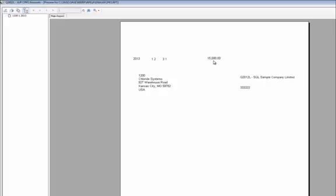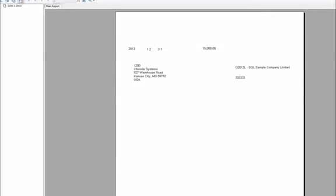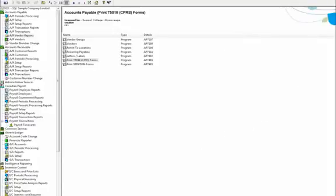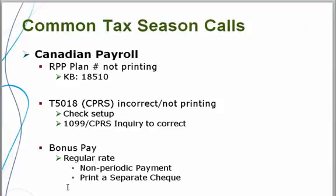So we have $12,000 and $3,000, which makes $15,000 total. Another common call is bonus pay. Sometimes customers would like the regular rate to be calculated on the bonus amount. Normally you can select the non-periodic payment option within the setup of the bonus pay, and it should treat it with the regular rate calculation.